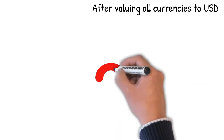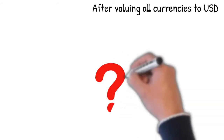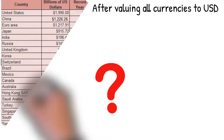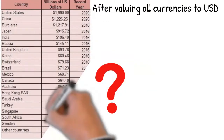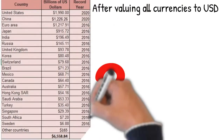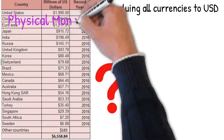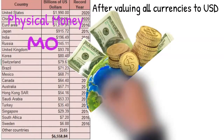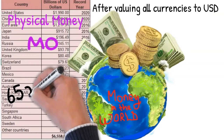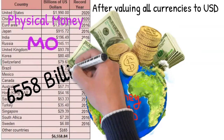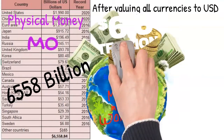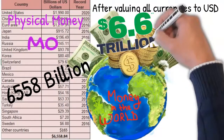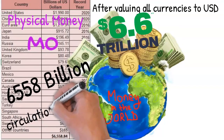To make things simpler for calculation, we assume that all monies were to be converted into US dollars, as it is also the most widely used currency in the world. If we are talking of just physical money — including banknotes and coins, also known as M0 — then it is around 6,558 billion US dollars, or 6.6 trillion US dollars. That's the amount of physical money in circulation in the world today.